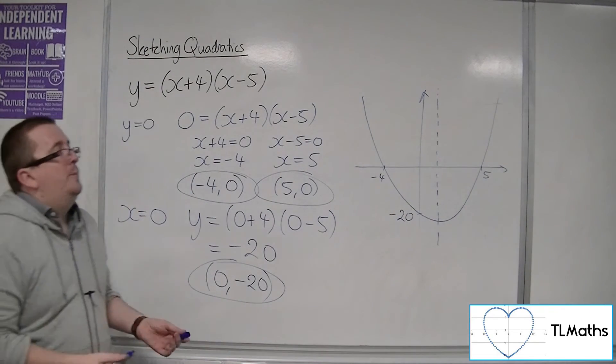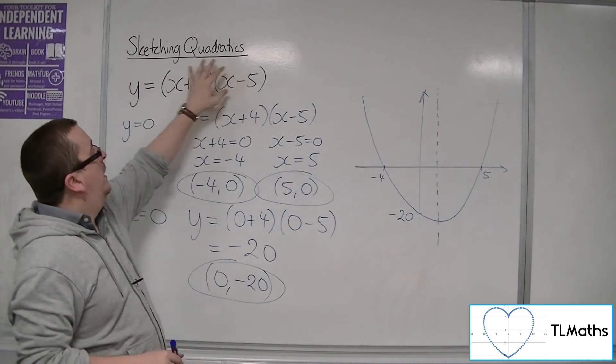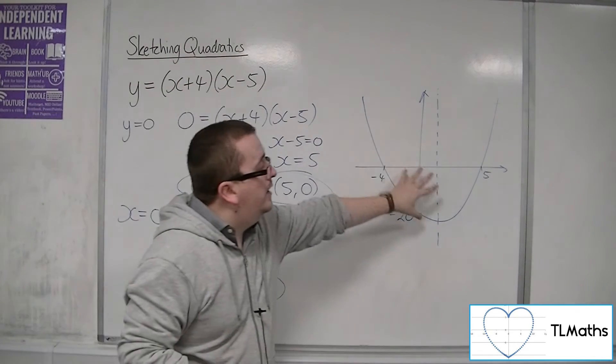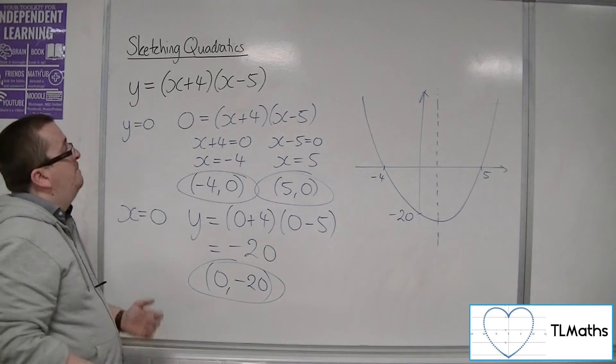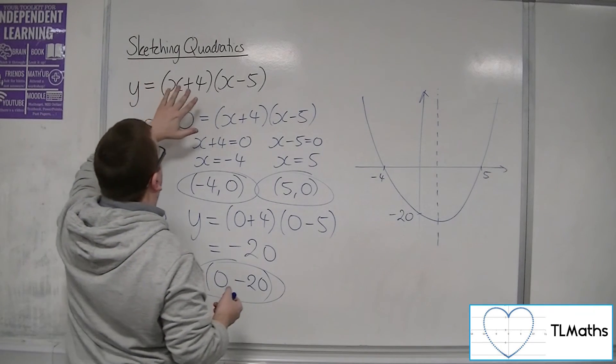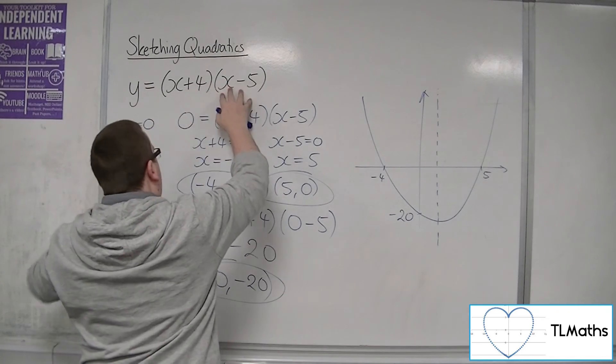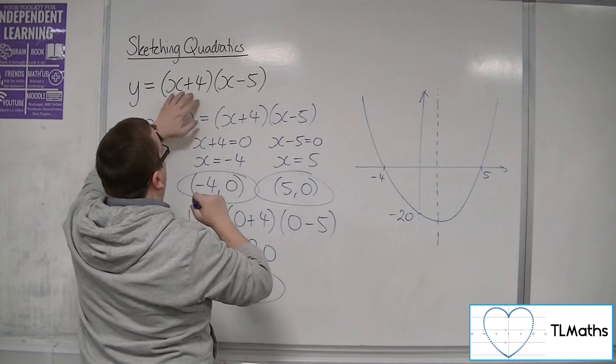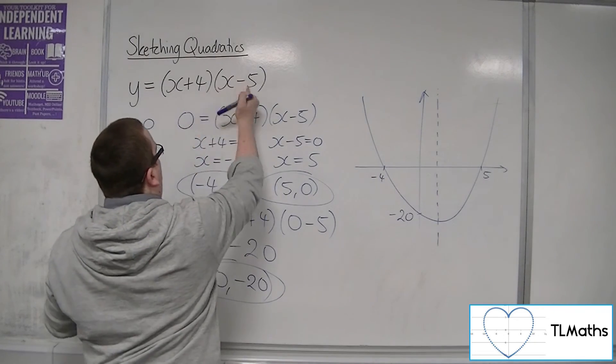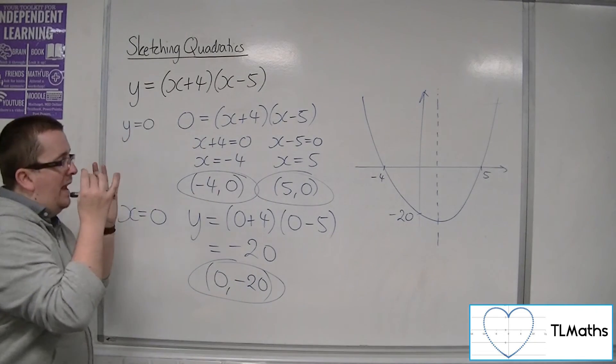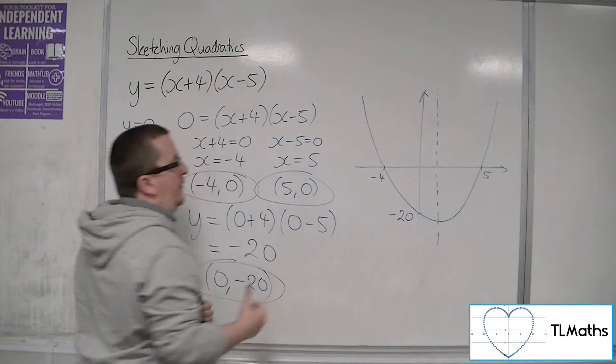So, what we want to be able to do is we want to be able to go straight from that equation there to the curve without really having to do all of this. So, we should be able to go, well, it's crossing through at -4 and 5, so we're changing the signs of what's there. So, -4 and 5, and it's crossing through the y-axis at 4 times -5, -20. And we should be able to go directly from that line to the sketch.